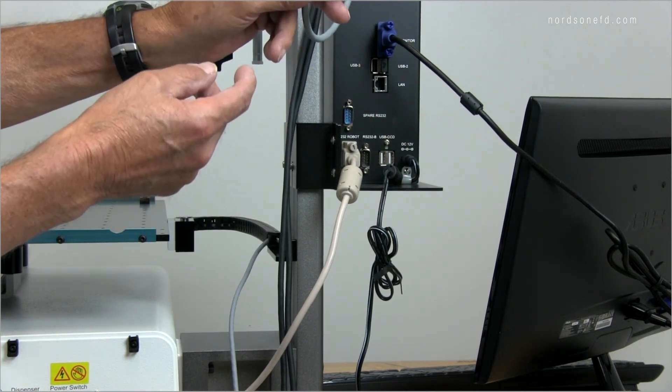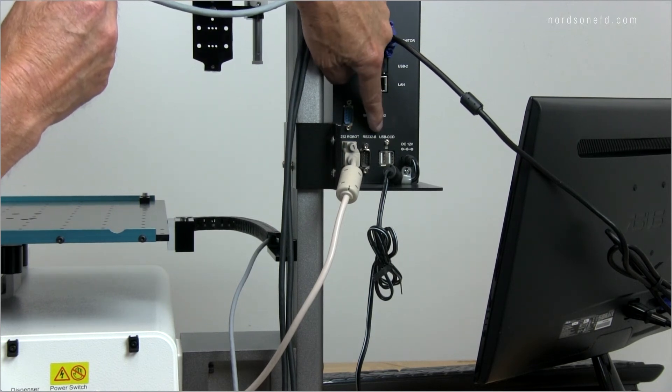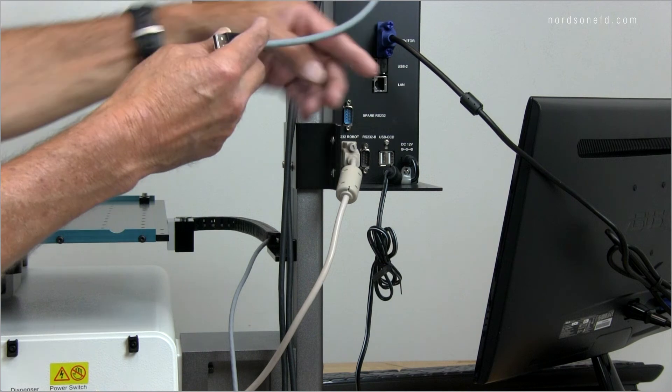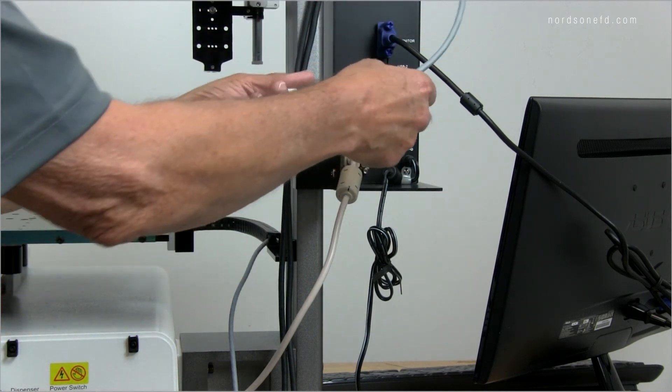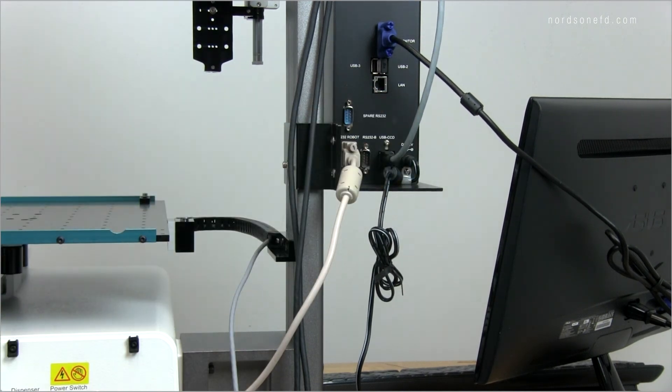And then from there, I'm going to take my cable for the camera. And you can see there's a pair of USB ports here labeled USB CCD, and that's where we're going. So we'll spring this cable down, and we will plug it in. And there we go.